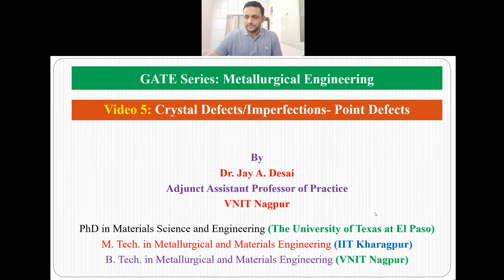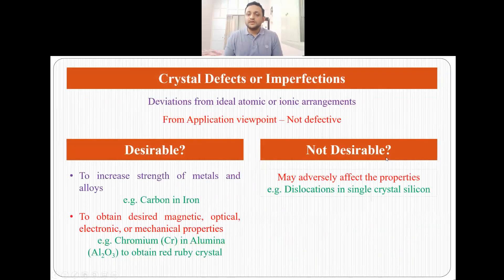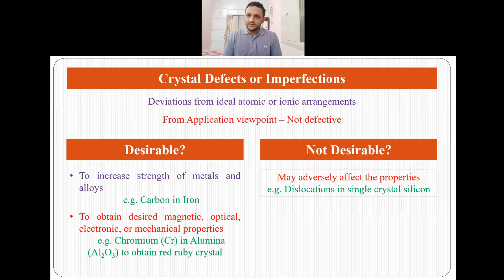Crystal defects or crystal imperfections are deviations from ideal atomic or ionic arrangements. Suppose you have an arrangement of atoms and ions, and there is some deviation in this arrangement, then this deviation is what we call crystal defects or crystal imperfections. But from the applications viewpoint, the material is not considered defective.